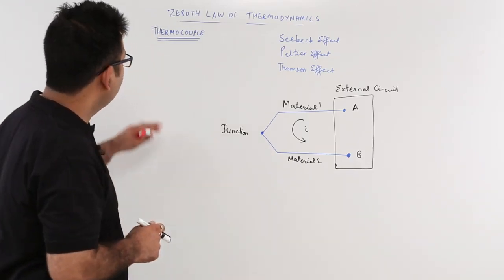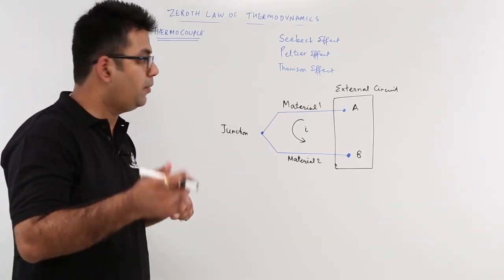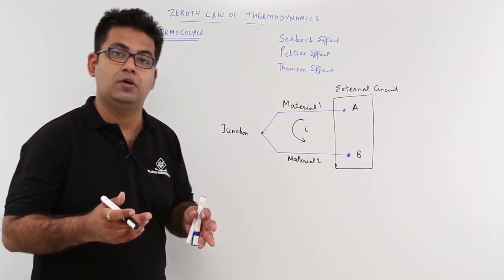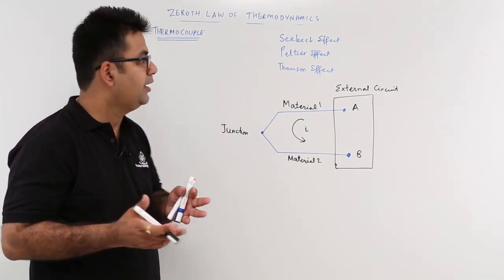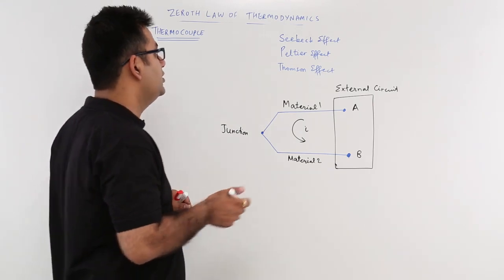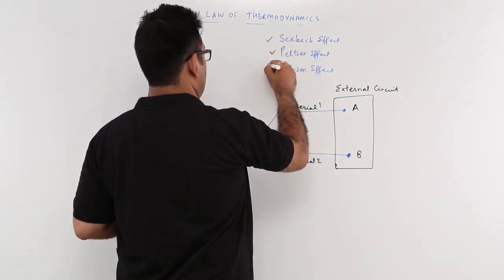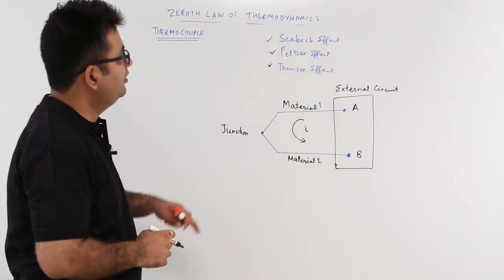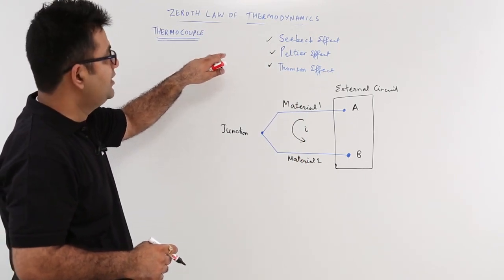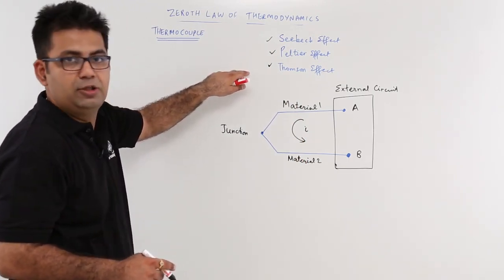Now let's talk about the thermocouple, which is also a kind of thermometer. How do we use it? What is the basic concept behind it? Well, a thermocouple works on these three effects. The first is the Seebeck effect, the second is the Peltier, and the third is the Thompson effect.